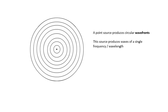This is a point source. It could be dipping your finger in a ripple tank, producing these circular wave fronts. It could be something making a noise, spreading waves out in all directions. These are circular wave fronts. When you do all your diagrams with lenses and stuff, very often you draw wave fronts. The distance between the wave fronts is a wavelength. This source produces waves of a single frequency, so it's a single wavelength.